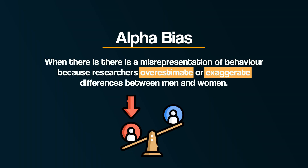Now let's discuss each of these key terms with examples from psychology. Alpha bias is when there is a misrepresentation of behaviour because researchers exaggerate the differences between men and women. A classic example of this comes from none other than the infamous and controversial Sigmund Freud — and unsurprisingly, this is going to be a bit strange.